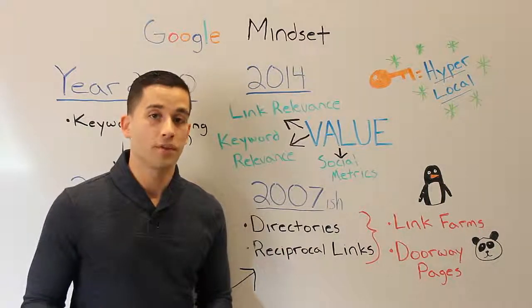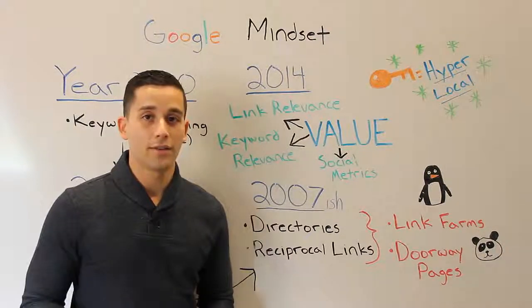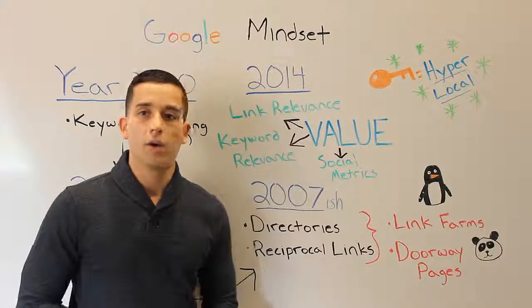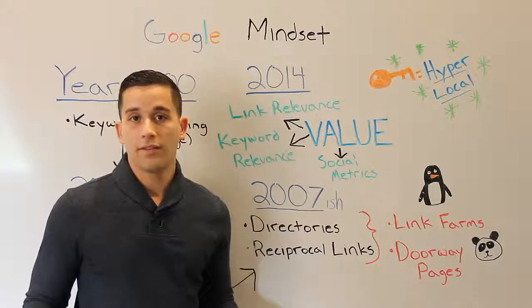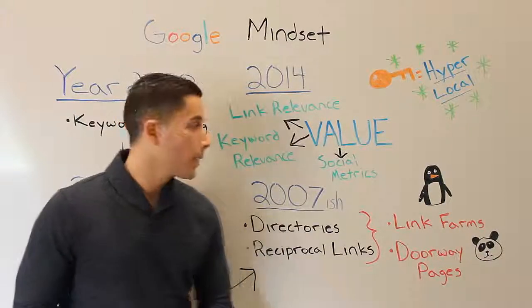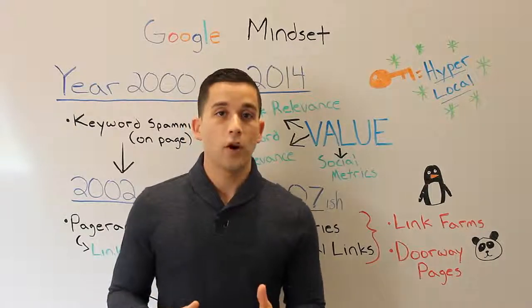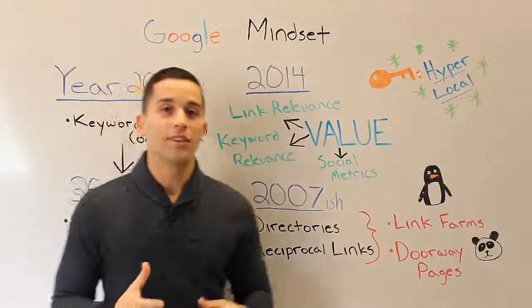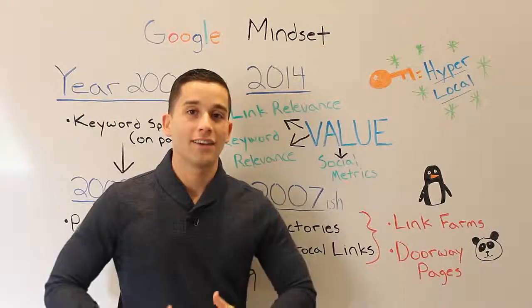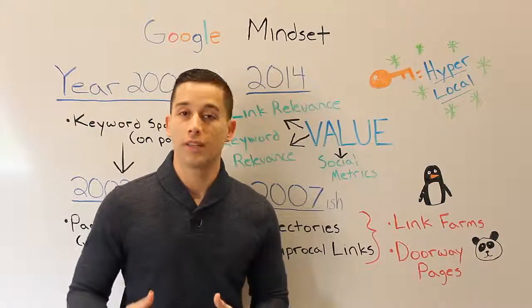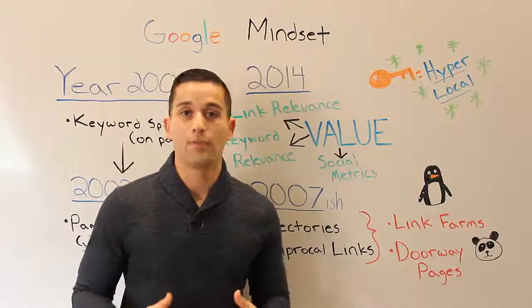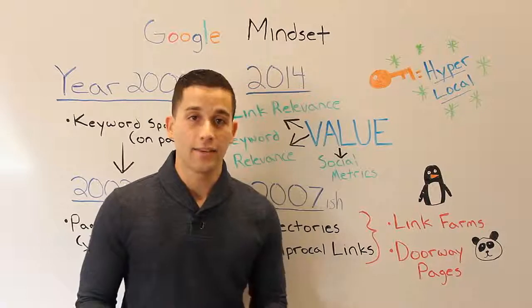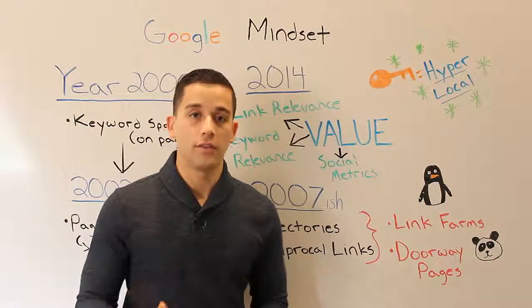I know a lot of agents and brokers personally who were very much affected by this. Either their sites were pushed far from page one, or they were removed from Google completely, and it took months, if not years, to get repaired. What I'm trying to showcase is that from the beginning of Google's time to now, you see a basic linear trend: Google likes value. Google wants to put the stuff that provides the most value at the top, and they're hell-bent on making sure spam and black hat SEO never see the first page.